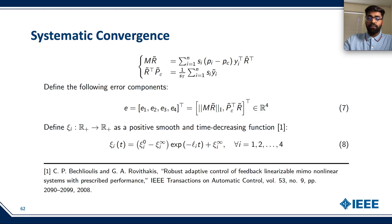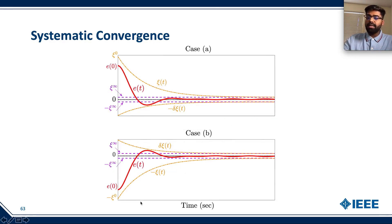We define the following prescribed performance function to be a positive, smooth, and time decreasing function. Here is the concept of prescribed performance. We have an error that is marked in red. We would like this error to start within a known large set and to reduce systematically and mostly stay within a small bounded set.